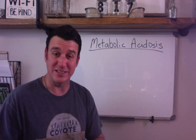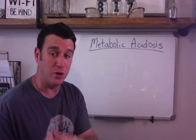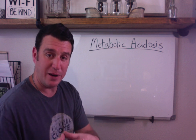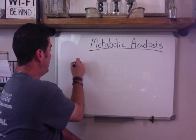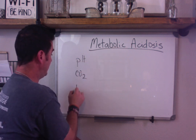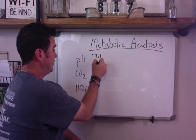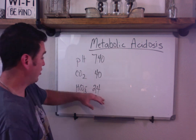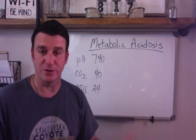To get started, we're going to break it down just like we have the other ones — start with the normals and show you each level of the metabolic disturbance that could cause an acidosis. We have pH, CO2, and bicarb. Normal values: bicarb of 24, CO2 of 40, and your pH is 7.40.